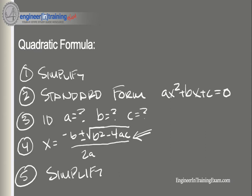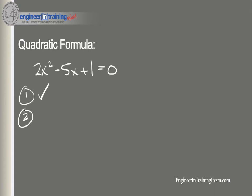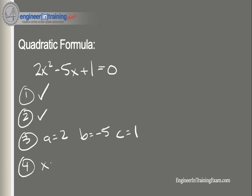Let's look at a quick example. Take the equation 2x squared minus 5x plus 1 equals zero. Step one, simplify — done. Step two, standard form — completed. Step three: in this case, a equals 2, b equals negative 5, and c equals 1. Step four: take the quadratic formula and populate it.